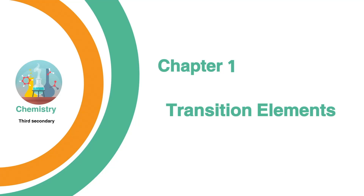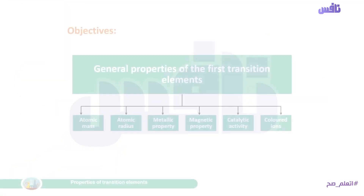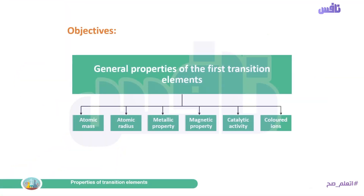Welcome dear students, third secondary, chemistry chapter 1: transition elements. We will listen to the general properties of the first transition elements. We already know the location of transition elements in the periodic table and their economic importance, and the electronic configuration. Now we need to know the general properties: atomic mass, atomic radius, metallic property, magnetic property, catalytic activity, and colored ions.